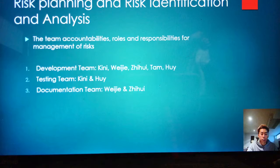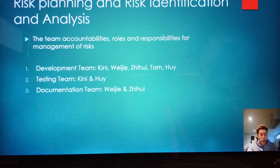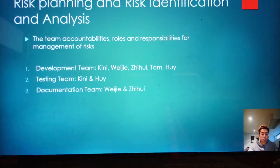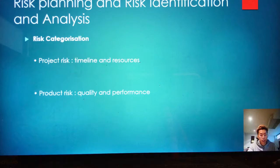The next part I will explain Risk Planning, Risk Identification and Analysis of my Risk Project. For the roles and responsibilities of Risk Management, we divided our group into three parts. The first part is the Development Team. The second part is the Testing Team, with two members who have coding experience. The third part is the Document Team, with two members. Although our group has fewer members than other groups, our group has strong interaction and all tasks can be completed before the deadline.